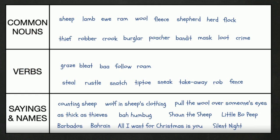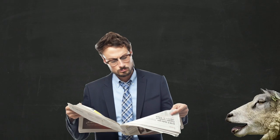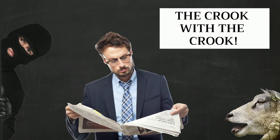Are there any homographs in our bank of words? Yes. A crook is a thief, and it's also the stick that a shepherd uses. Let's write a headline using that pun: The Crook with the Crook.